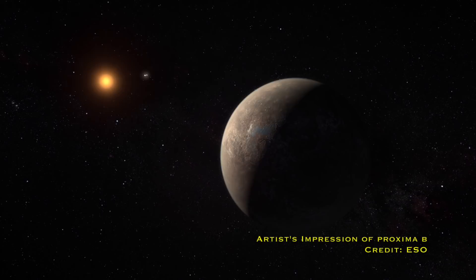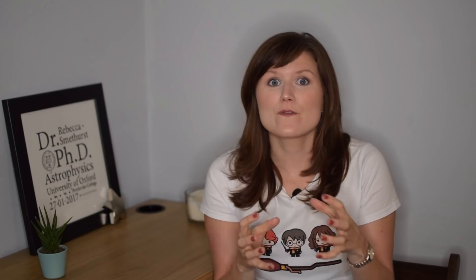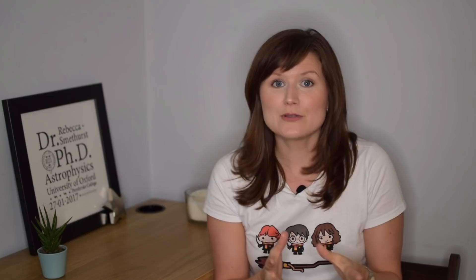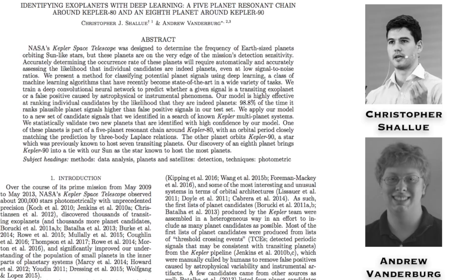Then in 2017, the record for the number of exoplanets in a single system was broken twice in quick succession. First of all, Gillon and his collaborators announced that they had found a seven-planet system around the star TRAPPIST-1, all of which were rocky planets and in the habitable zone around this dwarf star again.